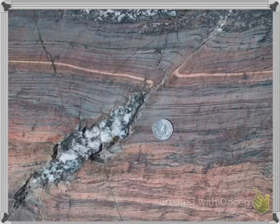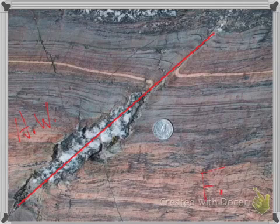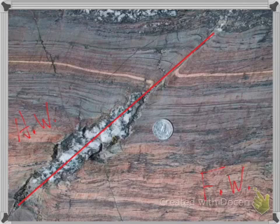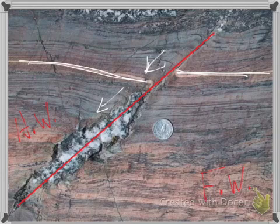Here is the first real picture of a normal fault. Someone placed a quarter there for perspective — it's not a very big fault. There's the fault line. The hanging wall is on the left because it is above the fault line, making our foot wall on the right. We know this is a normal fault because the hanging wall moved down — you can see that tan or very light line of rock on the left used to match up with that same line on the right, but this side moved down.